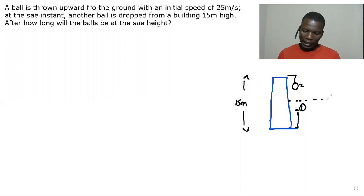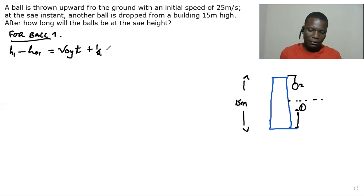So we write the equations of motion for each ball. So we have, for the first ball, this first ball has got initial velocity. It has been given initial velocity. So we have final height minus initial height for the first ball. We have initial velocity in the vertical plus half gt squared.